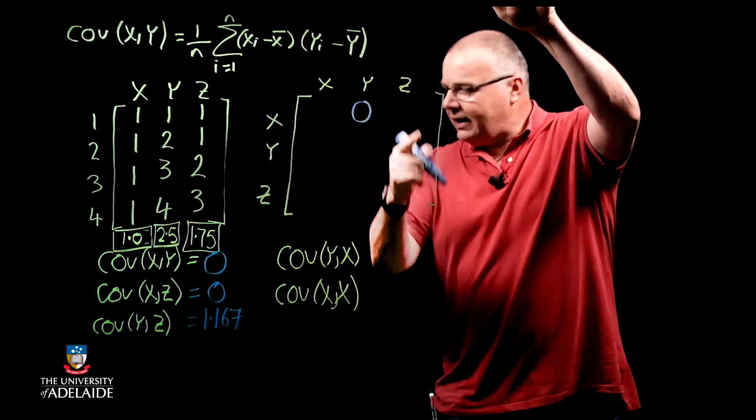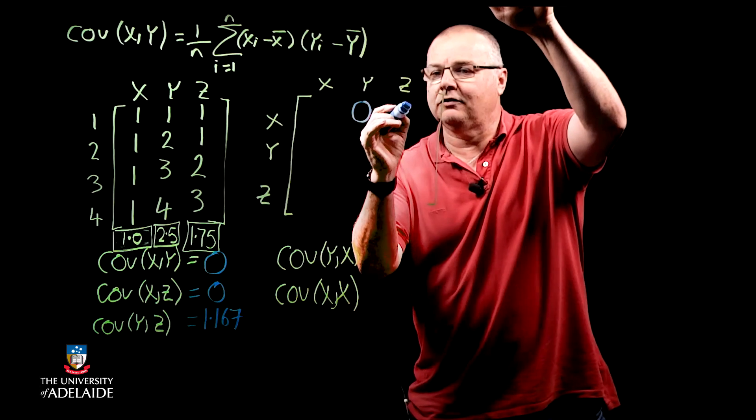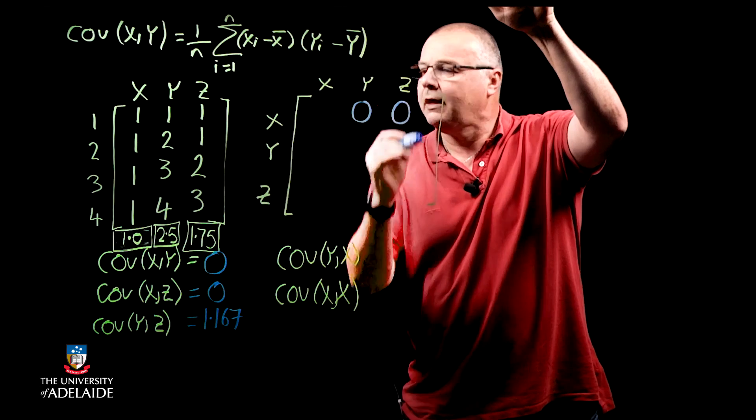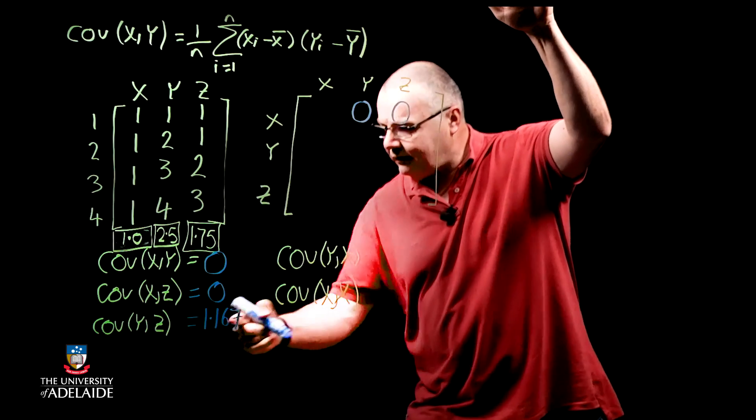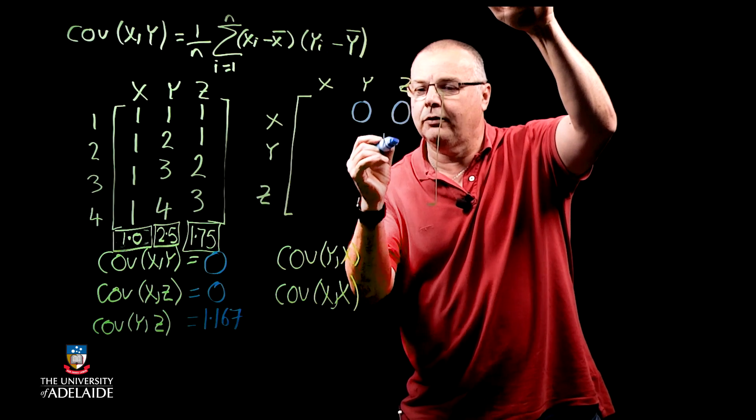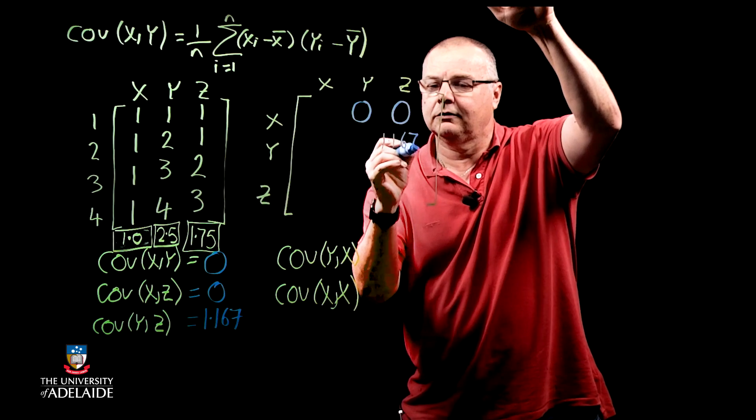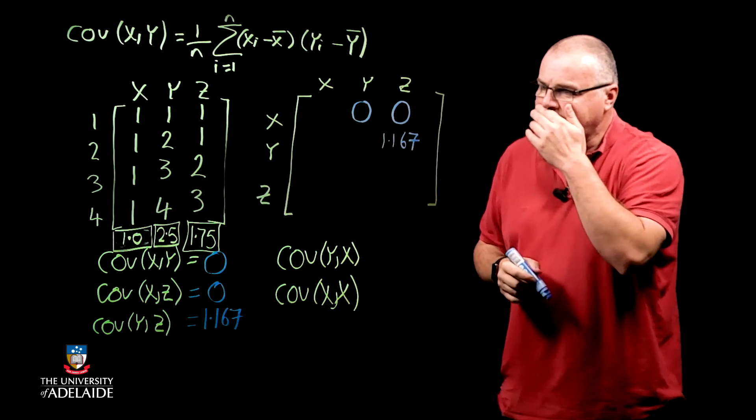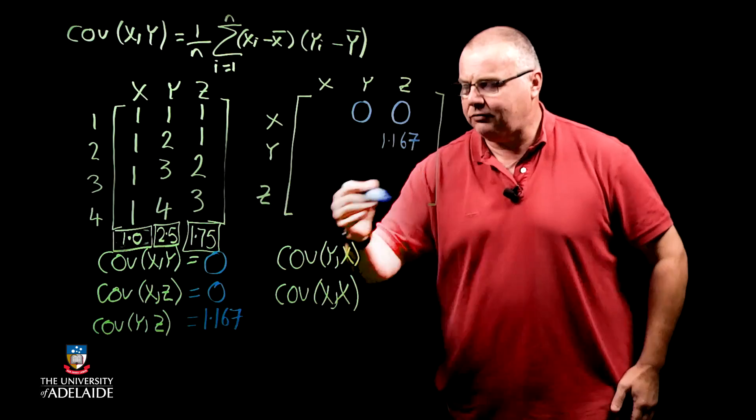Next one, x and z, x and z, that's going to be zero. And then y and z, we've got this 1.167. But we've still got all the rest of this matrix to calculate.